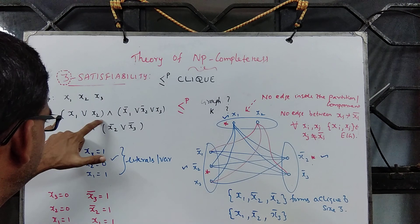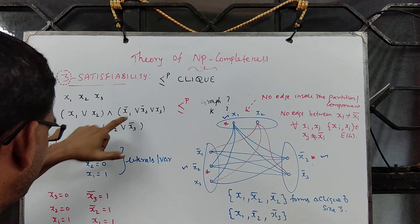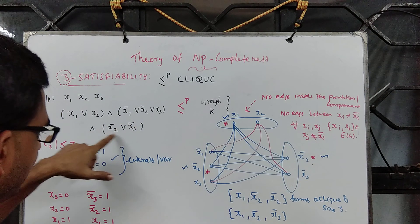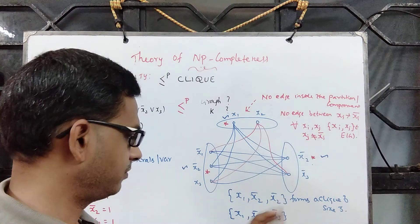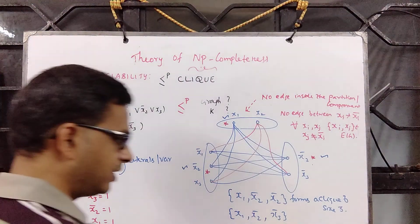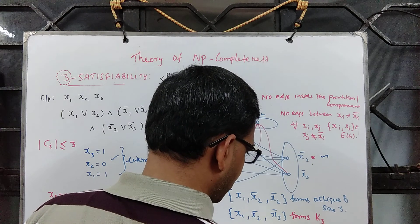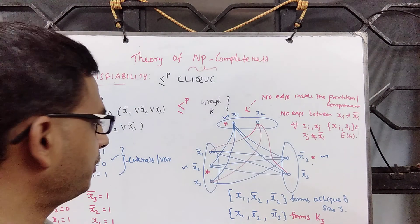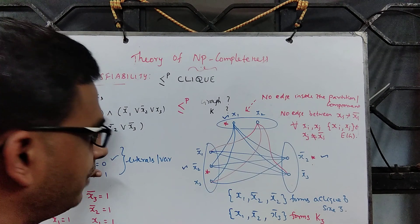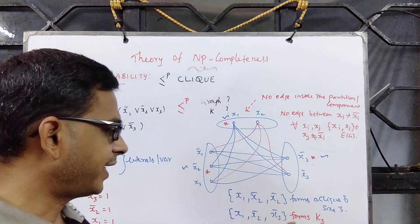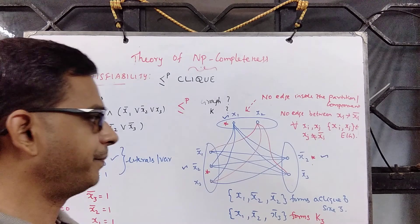This clause is evaluated to true because of x1, this one is evaluated to true because of x2 bar, and this one is evaluated to true because of x2 bar or x3 bar — but I am considering x3 bar. And even this forms a clique of size 3, which is K3. Every truth assignment which evaluates the formula to true maps to a clique of size 3, meaning it is a solution-preserving map.